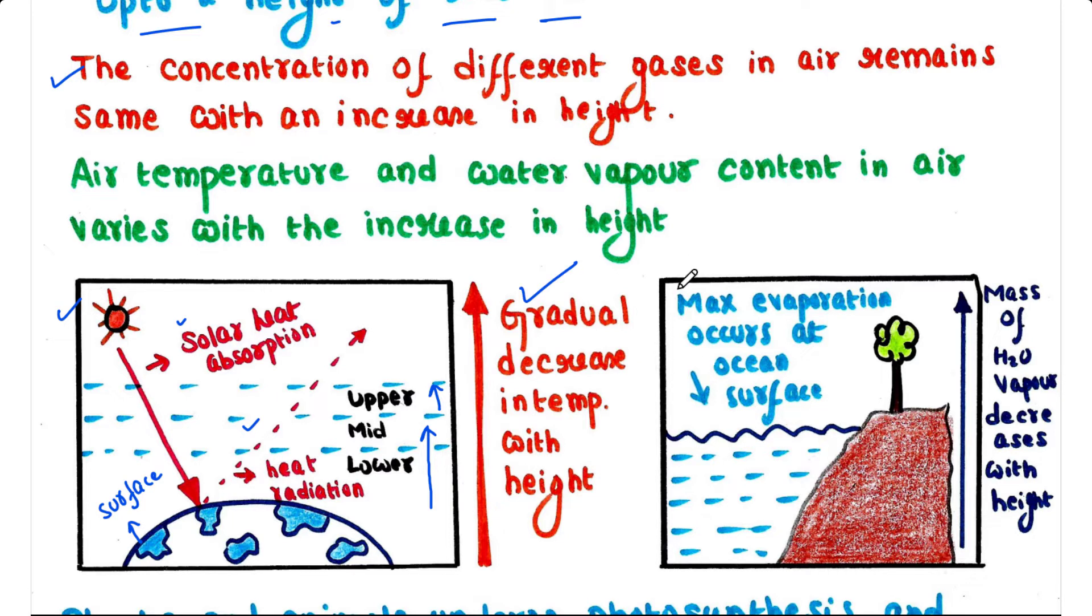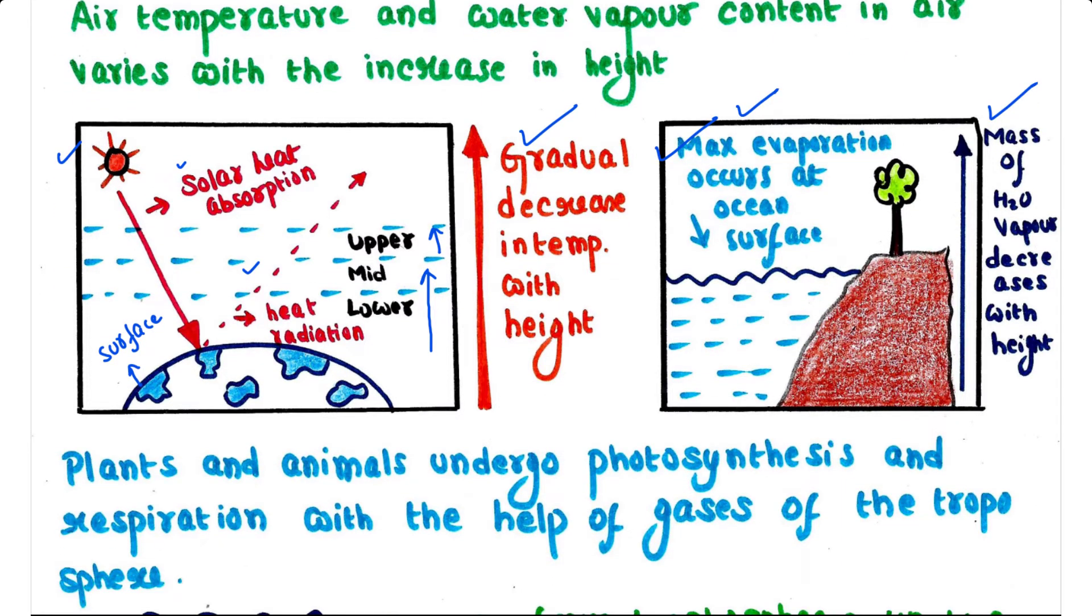And again you can see in this picture, the maximum evaporation occurs at the ocean surface. Hence the part of the troposphere over an ocean carries more moisture compared to the land surface, and the mass of water vapor decreases rapidly with an increase in height. Plants and animals undergo photosynthesis and respiration with the help of gases of troposphere.